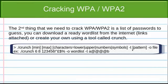The -t option is very useful if you know part of the password — it sets a pattern. For example, if you've seen someone type in a password and you know it starts with an A and ends with a B, you can use the pattern option to tell crunch to create passwords that always start with A and end with B, with all possible combinations of your specified characters in between.